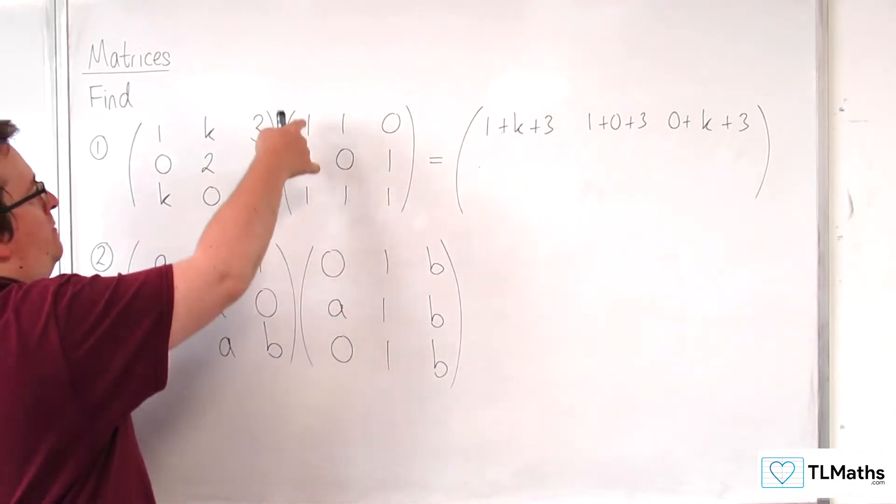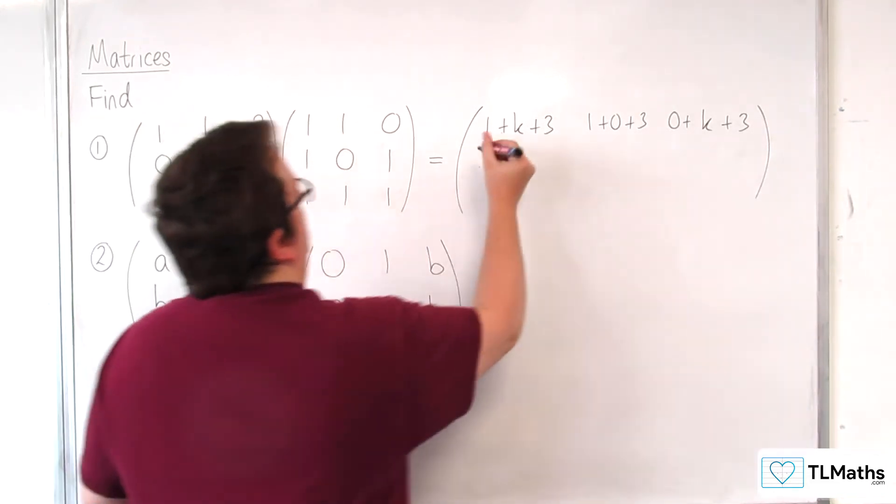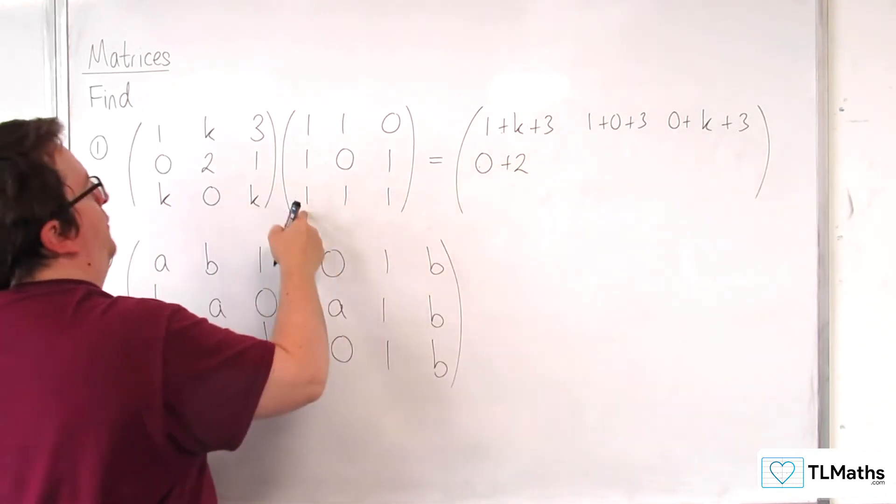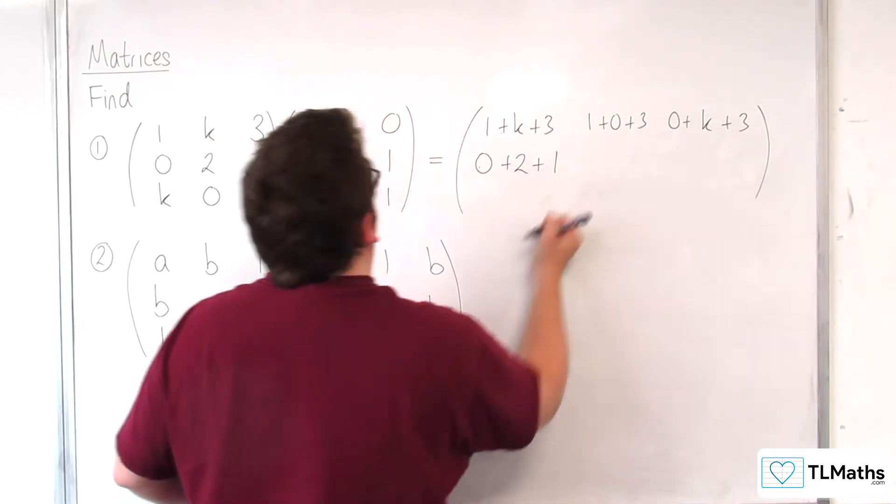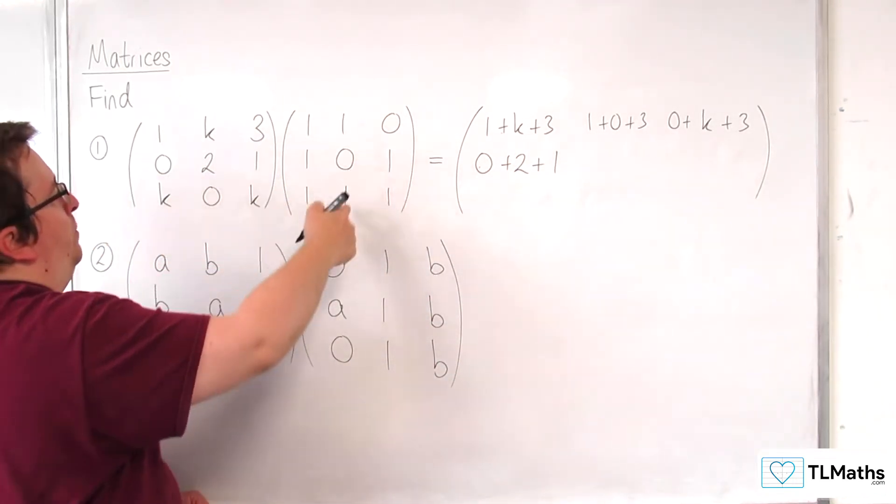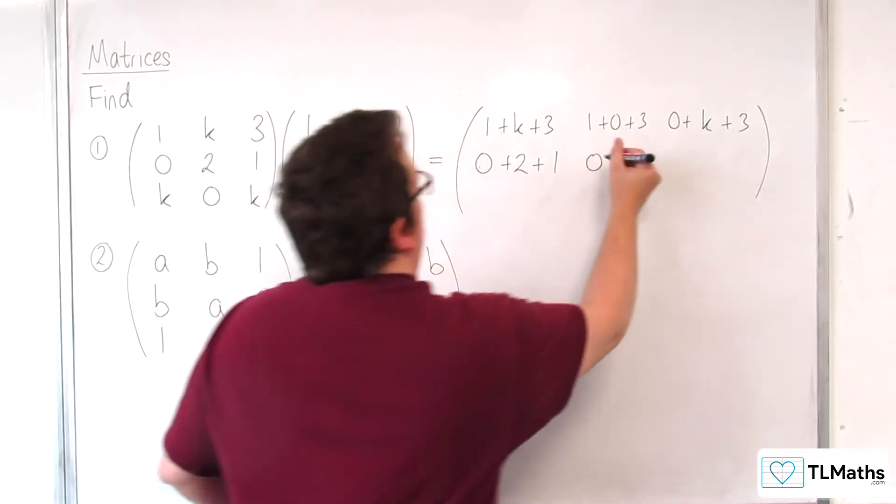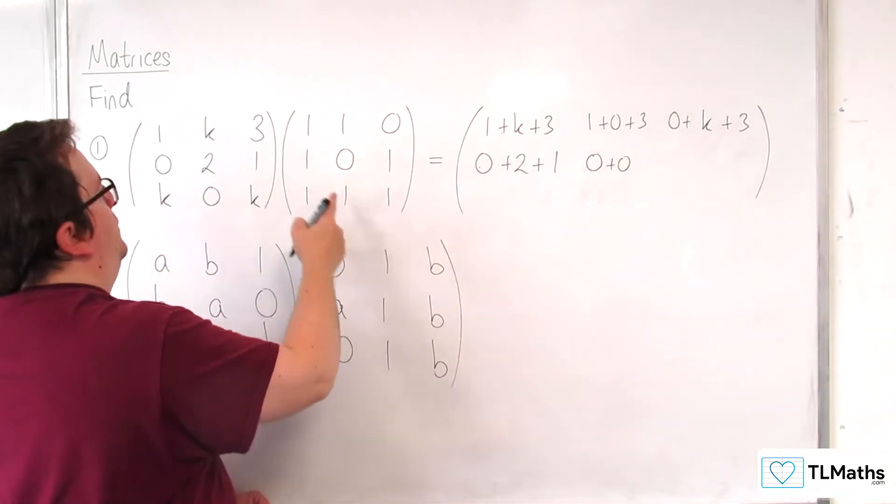So then we've got the 0, 2, 1 multiplied by that first column, so 0 times 1, 2 times 1, and then 1 times 1. Then we've got the 0, 2, 1 multiplied by the middle column, so 0 times 1, 2 times 0, and then 1 times 1.